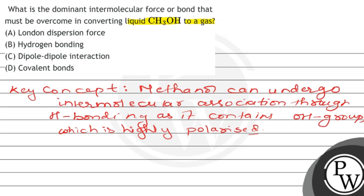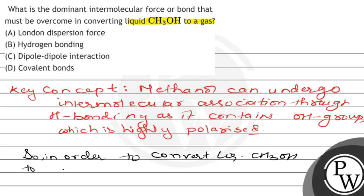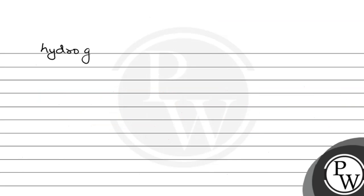So, in order to convert liquid CH3OH to gas, we have to break these hydrogen bonds. In order to convert liquid CH3OH to the gaseous state, the strong hydrogen bonds must be broken.